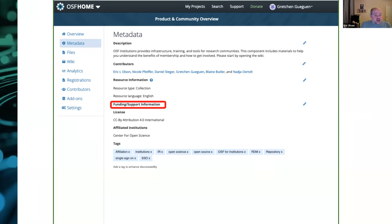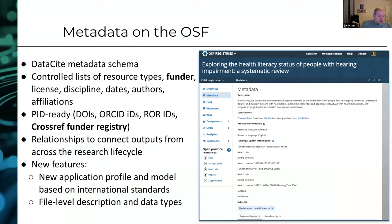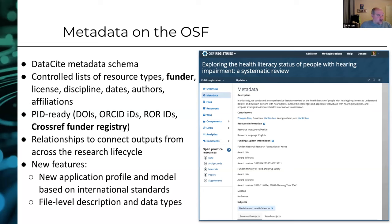We've integrated the Crossref Funder Registry into this. It's not relying on a researcher who may or may not spell your funder name correctly. They choose from the API responses from the Crossref Funder Registry, and we include that identifier in the metadata. So once you query that identifier, you're going to get that object. You can also add a grant identifier or other information as well.